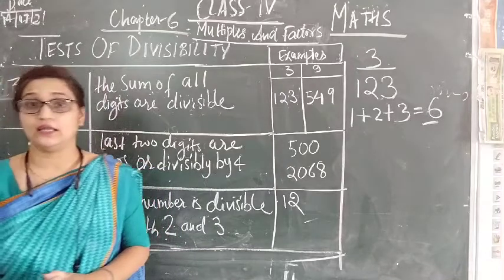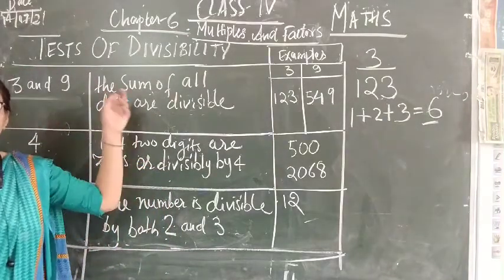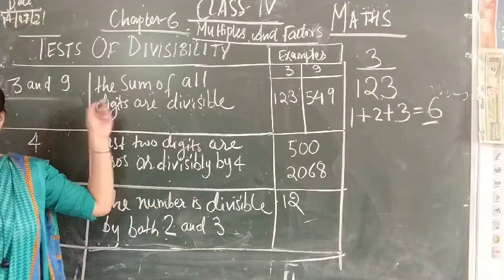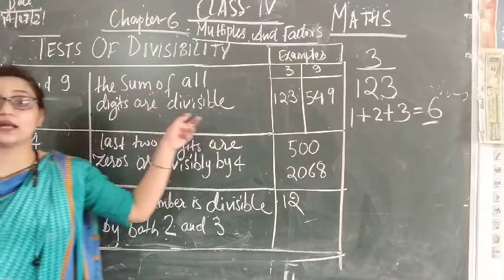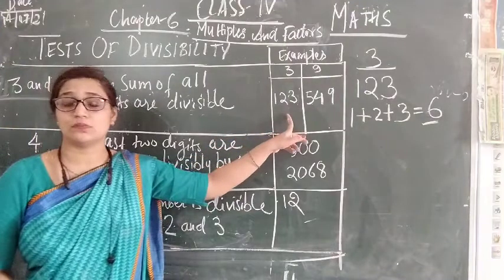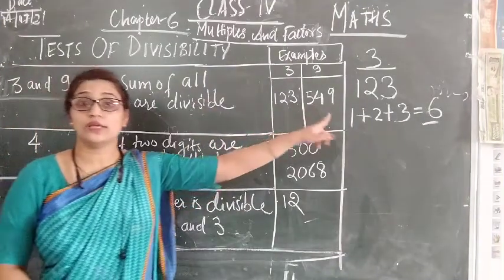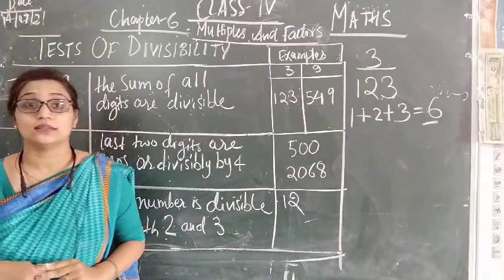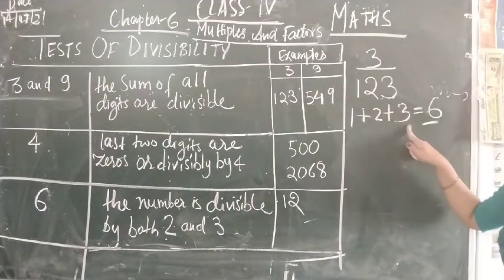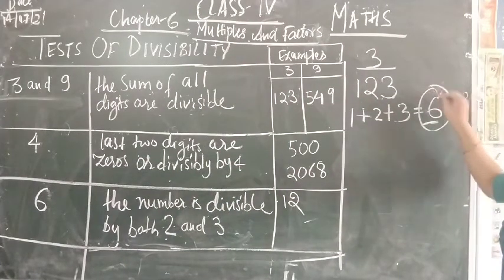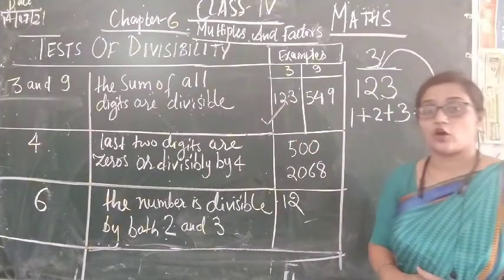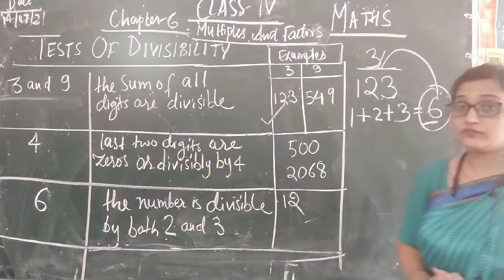So for 3 and 9, the condition is: if the sum of all digits is divisible by 3, and if we are talking about 9, the sum of all digits should be divisible by 9, and then we can say that the number is divisible by 3 or 9. For the example of 3, that is 123 — the sum of all digits: 1 + 2 + 3 = 6, and 6 is divisible by 3. That means 123 is an example of the divisibility test of 3.